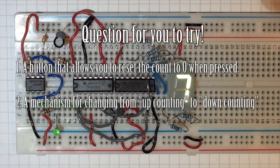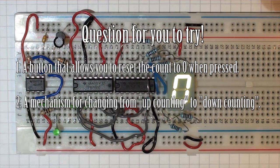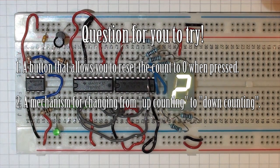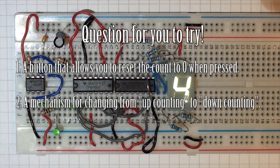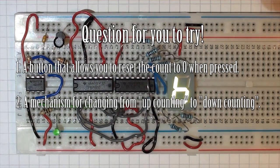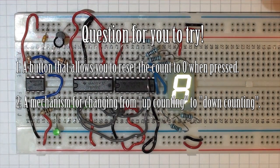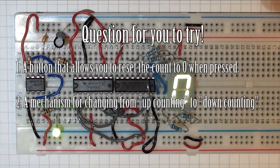And two, a mechanism for changing from up-counting, 0, 1, 2, 3, 4, 5, and so on, to down-counting, 5, 4, 3, 2, 1. 0 then goes back to 9 after that. So change this circuit to add those features.